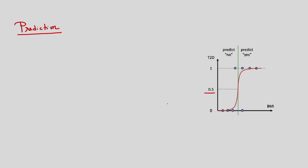For predictions: if we threshold the output probability at 0.5, we can consider a decision rule. ŷ(x) = 1 if P(y=1 | x) > 0.5. Based on this, I can take a classification decision. Corresponding to this figure, using the sigmoid function, all samples are correctly classified with threshold 0.5.